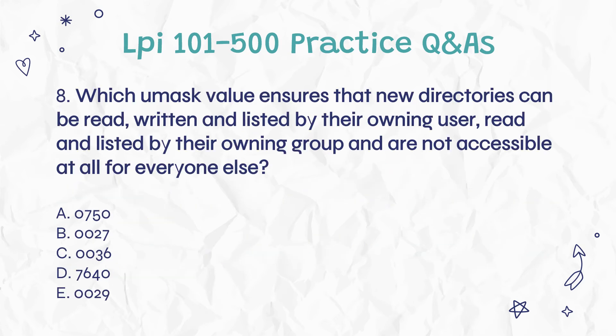Question 8: Which umask value ensures that new directories can be read, written and listed by their owning user, read and listed by their owning group, and are not accessible at all for everyone else? a. 0750. b. 0027. c. 0036. d. 7640. e. 0029.